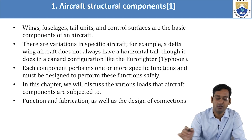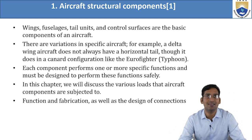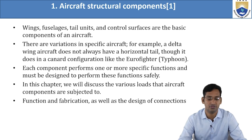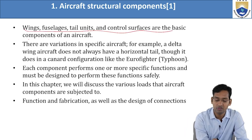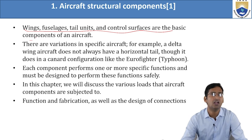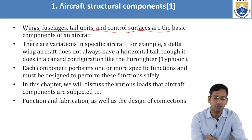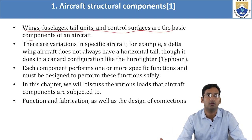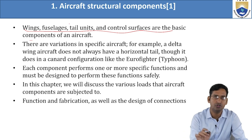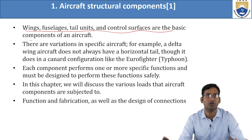The basic components related to aircraft structure are: wings, fuselage, tail unit, and control surfaces. These four are the basic components of an aircraft. Within each, there are many sub-components — wings have flaps and ailerons, fuselage has many parts — but these four are the most important.